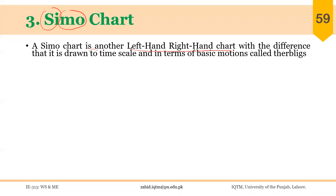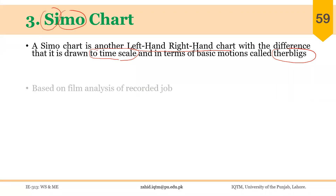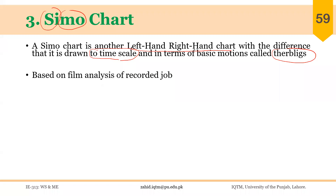Being drawn to timescale is one difference of this chart from the two-handed chart. Secondly, here we draw different activities in the form of therbligs. These are the two differences between the CIMO chart and the two-handed chart.